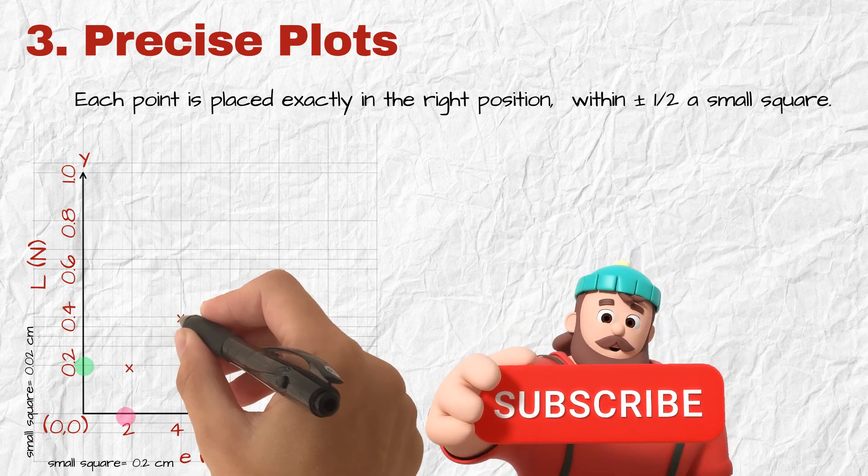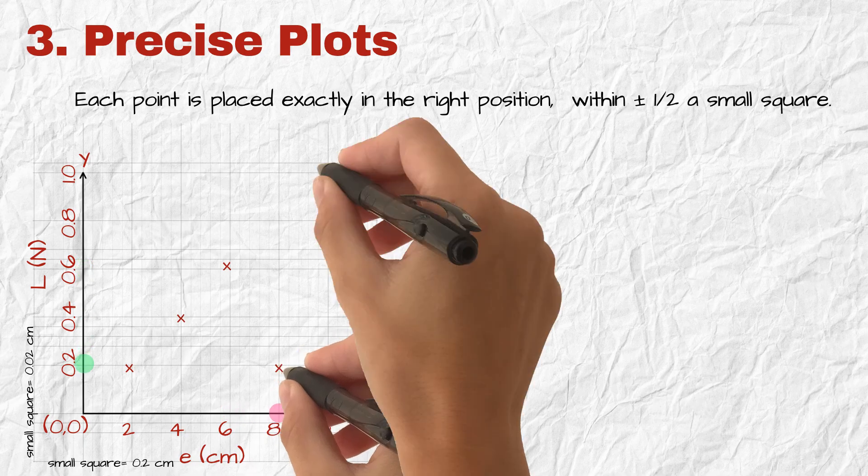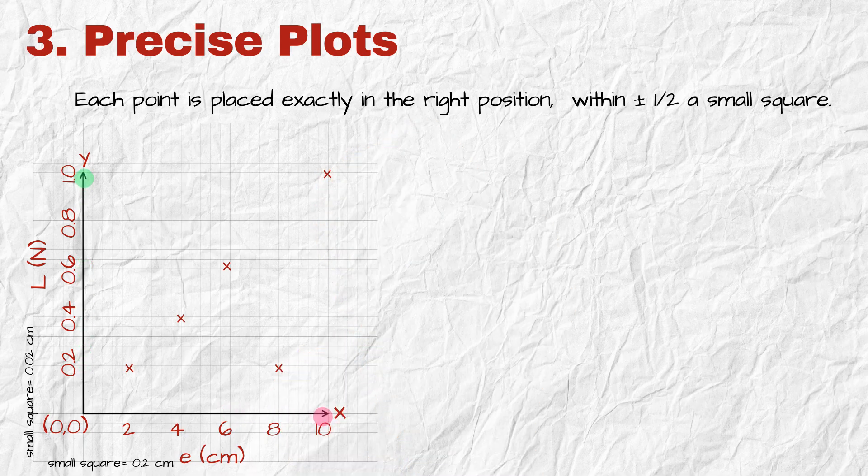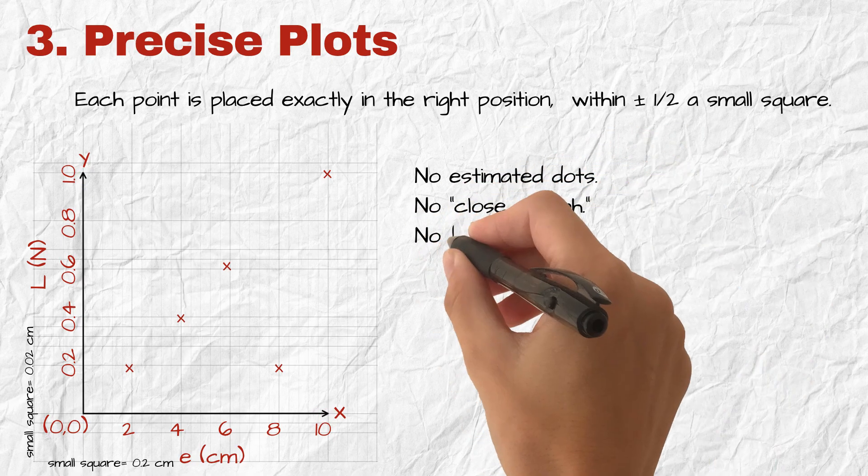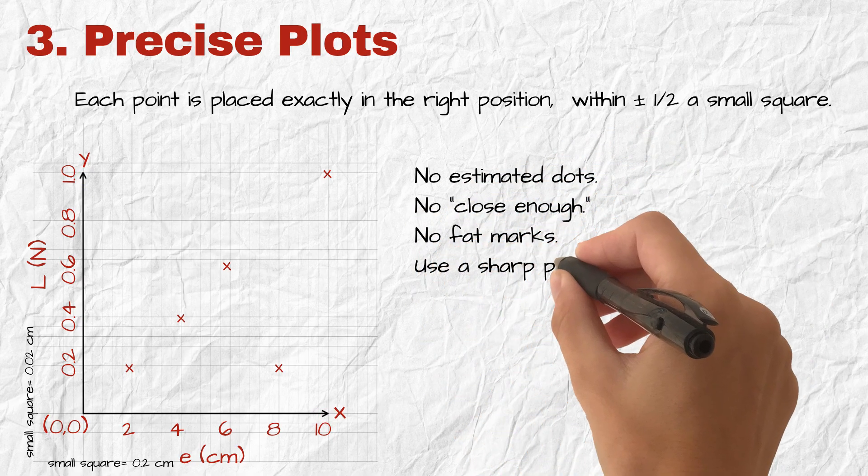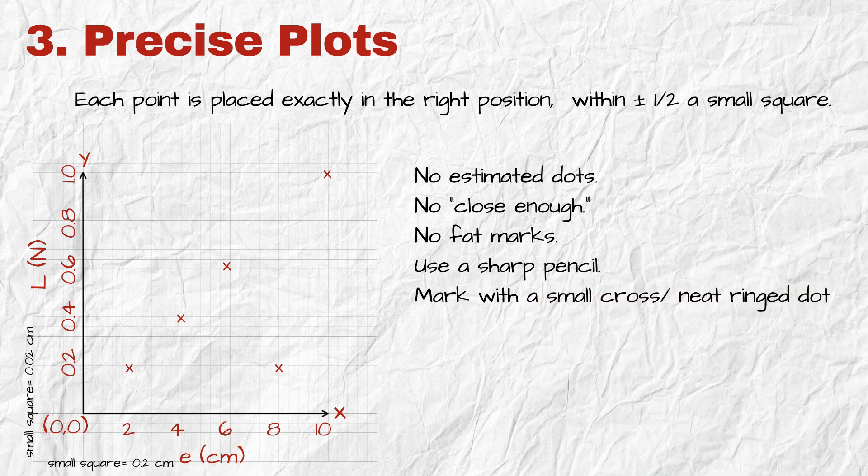You repeat that for each point. Five and zero point four. Seven and zero point six. Eight and zero point two. Ten and one. So these are dots plotted precisely. No estimated dots. No floating somewhere close enough. No fat marks. Use a sharp pencil. Mark with a small cross or a neat ring dot. And that's the third mark.